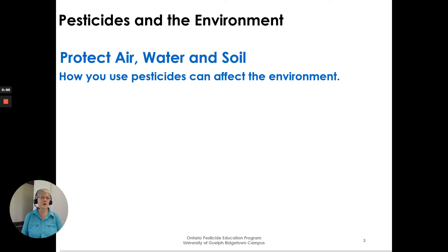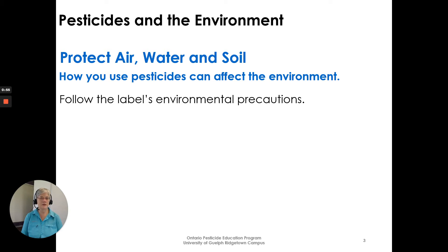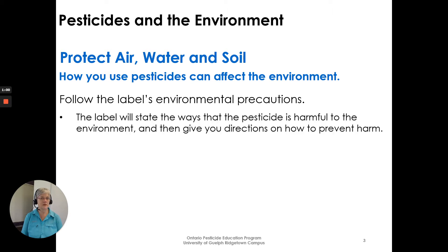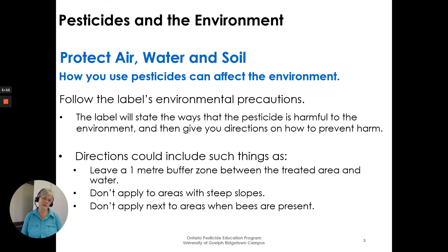Protecting air, water, and soil — how you use pesticides can affect the environment. Follow the label's environmental precautions sections. The label will state ways that pesticide is harmful to the environment and then give you directions on how to prevent harm. Directions could include such things as: leave a one-meter buffer zone between the treated area and water, don't apply to areas with steep slopes, and don't apply next to areas when bees are present.